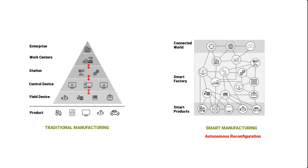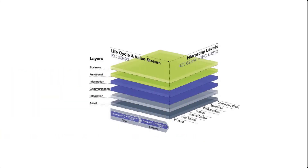Yet that can only happen if there is consistency in the representation of information. In other words, the manner in which information is represented in an ERP system must be the same manner in which information is represented in a field level sensor. This brings us to our next dimension, that of IT layers.